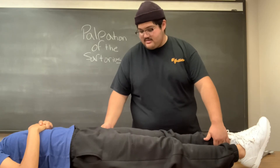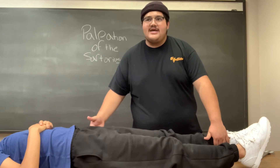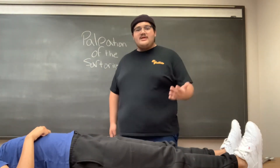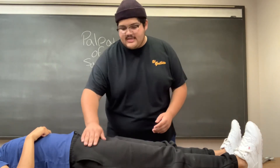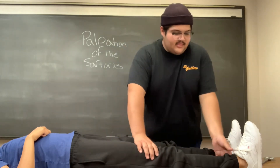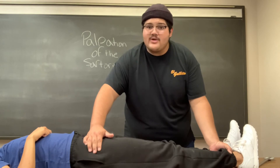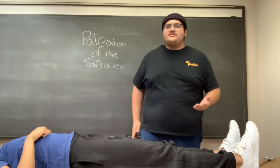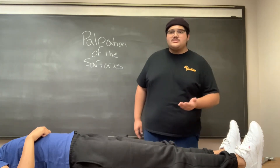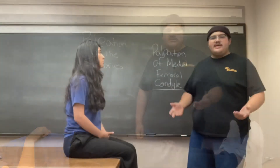Go ahead and resist. Right here near the ASIS, you can feel the sartorius almost pop out. Now I will palpate the other sartorius — again start at the ASIS, move down diagonally, and resist internal rotation. I feel the muscle right here. The sartorius ends at the medial anterior tibia at the pes anserine, along with the gracilis and the semitendinosus.